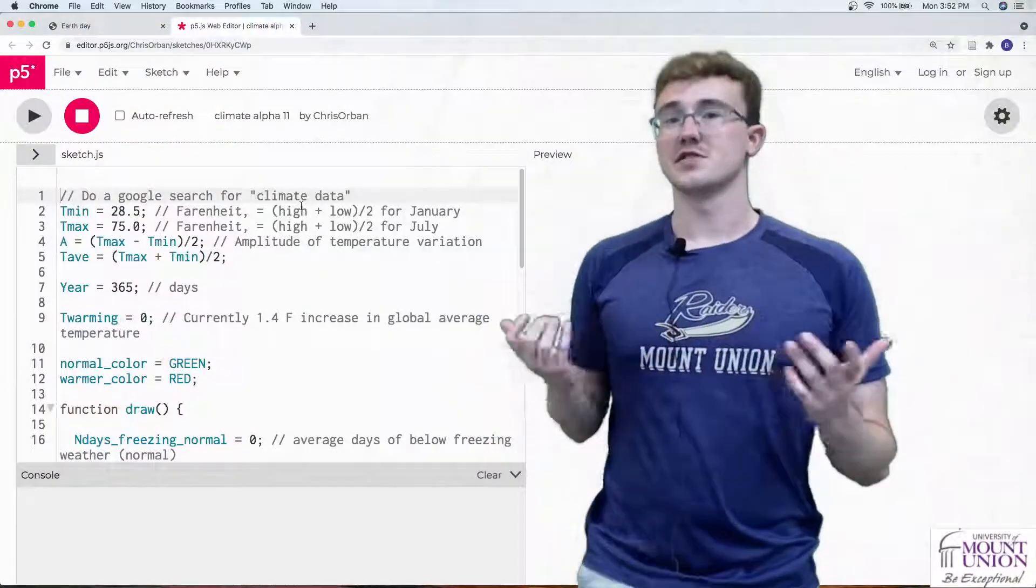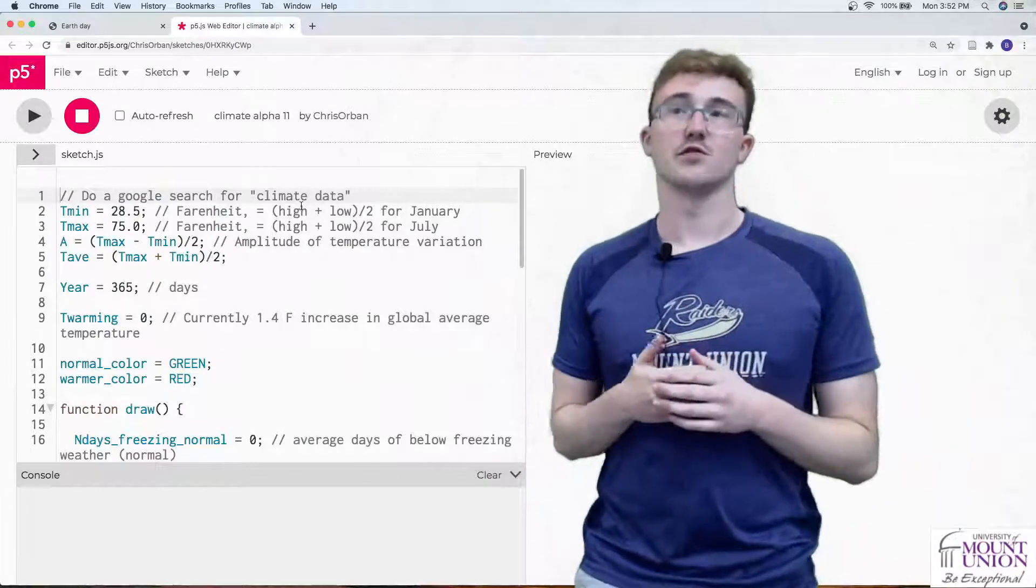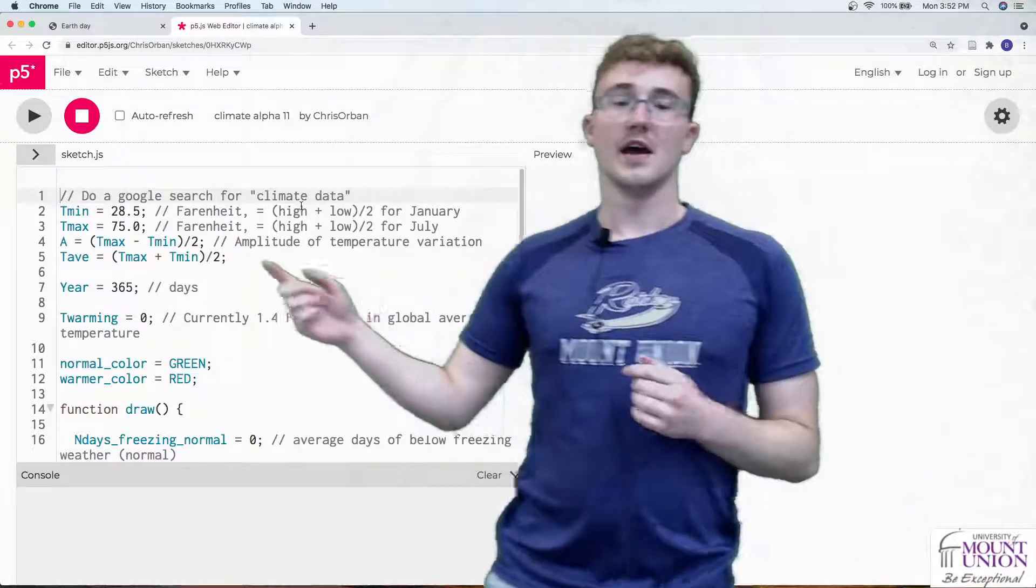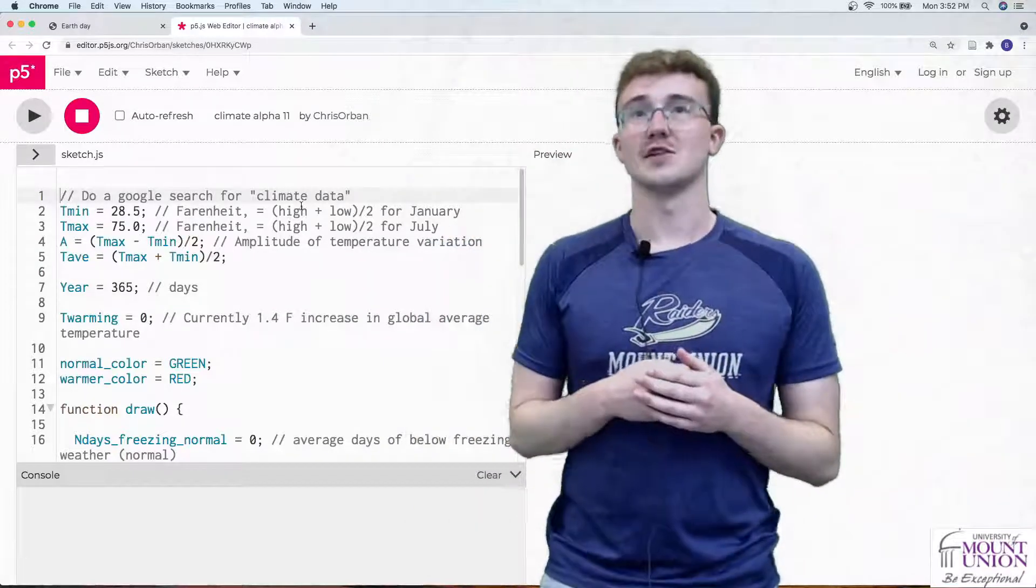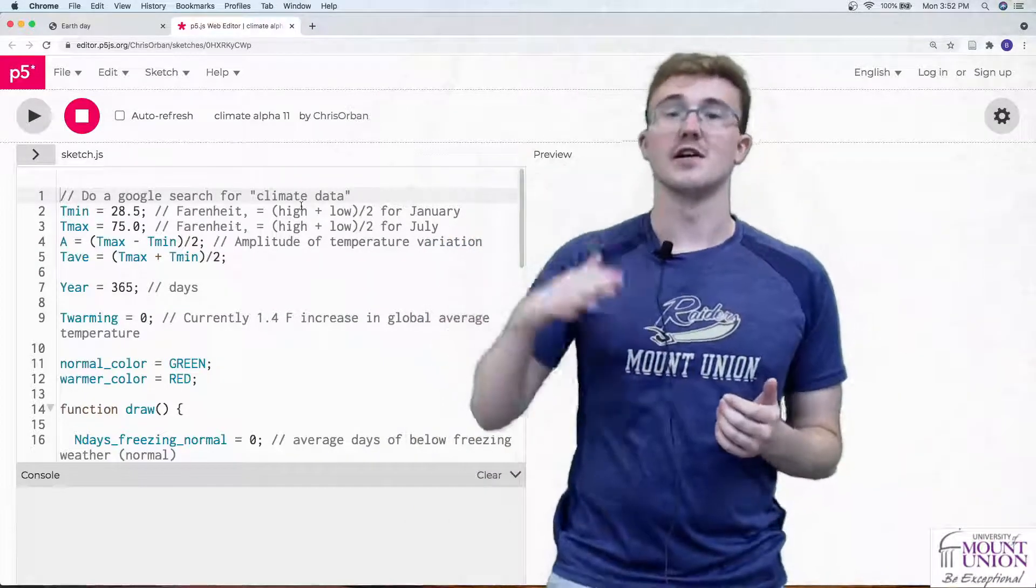The rest of this code sets up our functions for modeling global warming. A here refers to the amplitude, or how much the temperature varies from day to day.